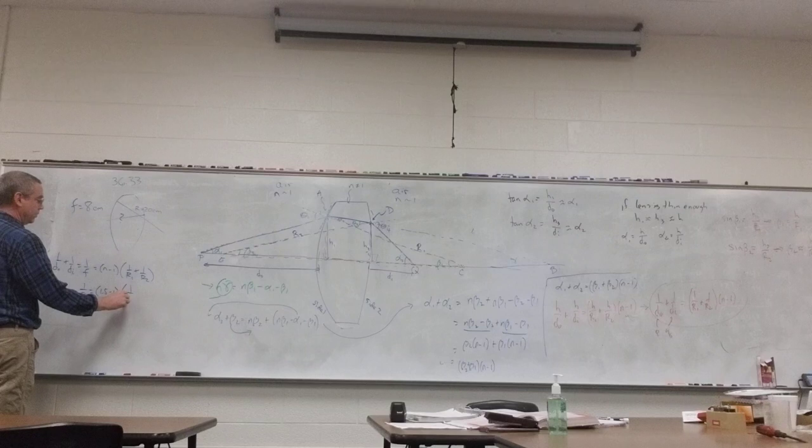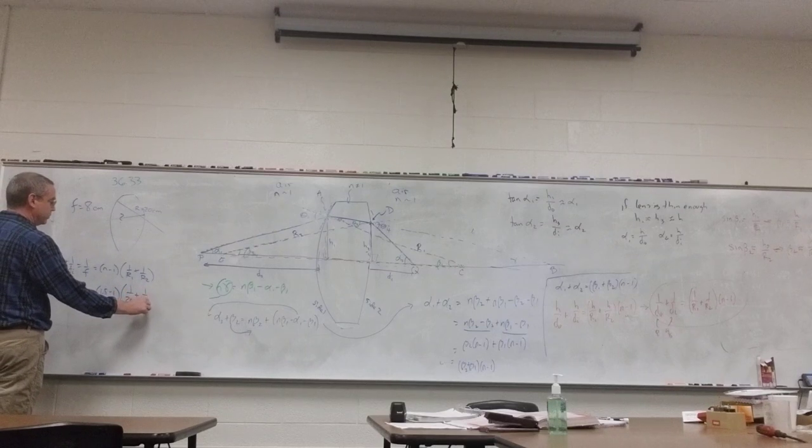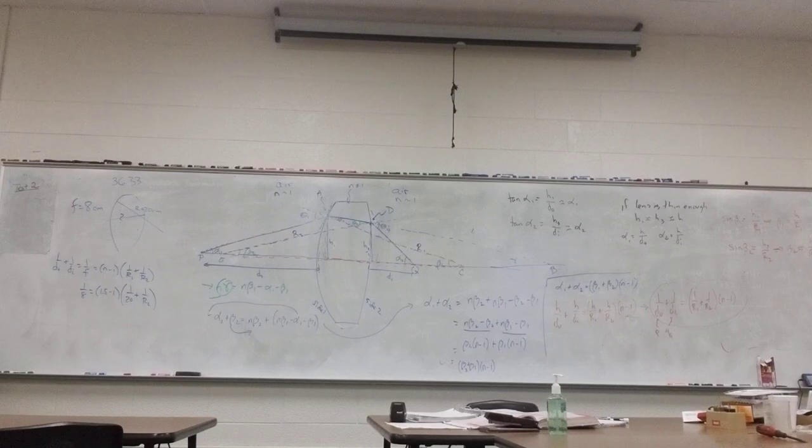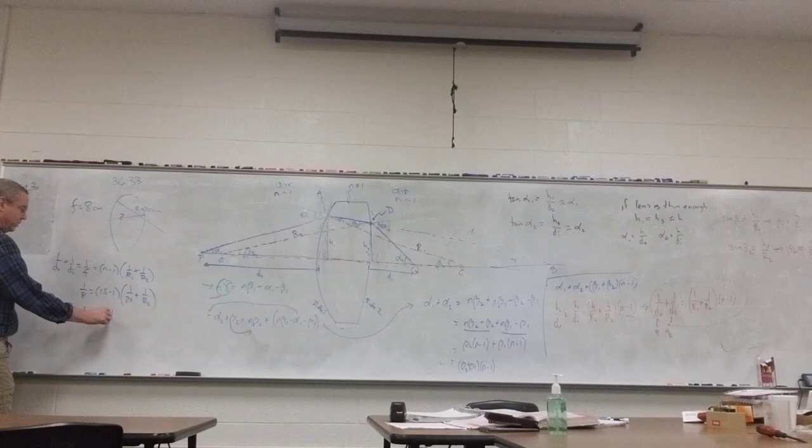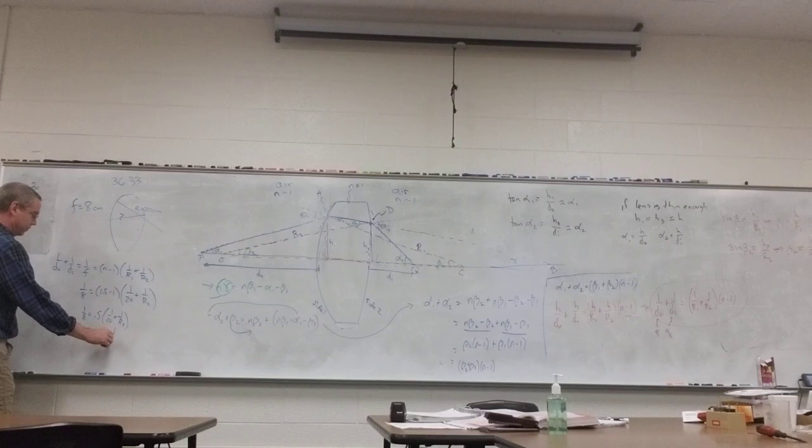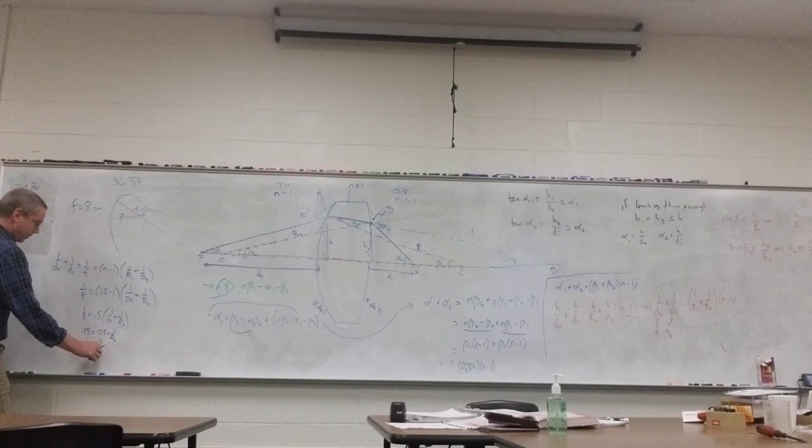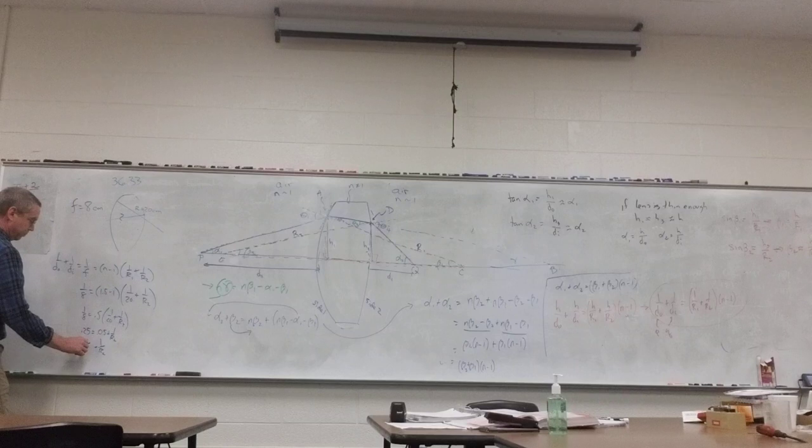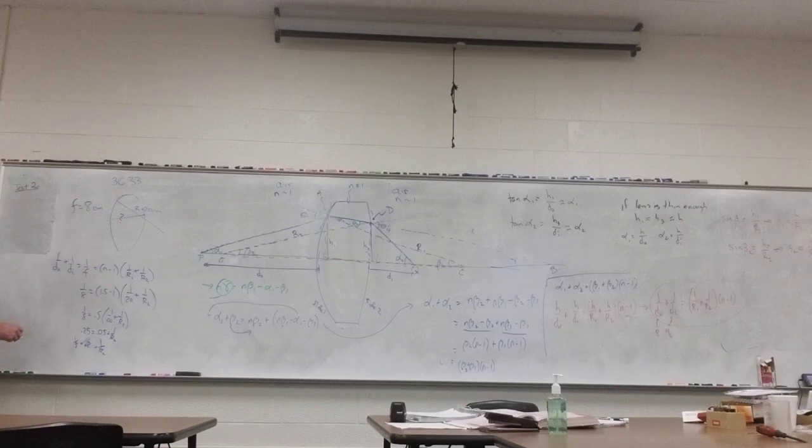1 over 20 plus 1 over R2. And so now it's a math problem solving for R2. This becomes 1 eighth equals 0.5 times 1 twentieth plus 1 over R2. Divide both sides by 0.5 and we get 0.25 equals 0.05 plus 1 over R2. Subtract, so 1 over R2 equals 0.2, otherwise known as 1 fifth. So R2 would be 5 centimeters.